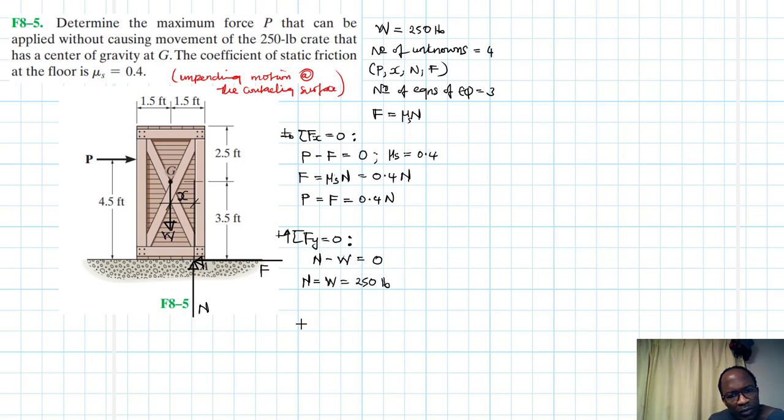But we also calculated what P is. So from here we are saying our P is equal to F which is equal to 0.4 N. Therefore P here will be equal to 0.4 times 250, which is equal to 100 pounds.